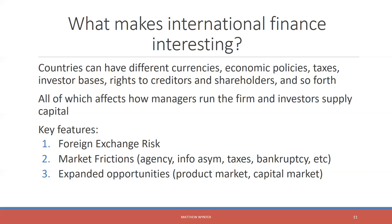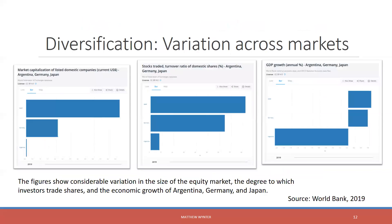All of this is going to lead to different opportunities. The same way market frictions can limit our opportunities, they can also present expanded opportunities. We'll talk about how companies can take advantage through the product market and the capital market. Why do we keep using the term diversification? I'm showing you that the market capitalization, the level of stocks traded, and the economic growth of Argentina, Germany, and Japan all vary considerably across countries. Given such differences in the size of capital markets and economic growth, logically there will be differences in how these capital markets perform — and those differences present the opportunity to diversify.